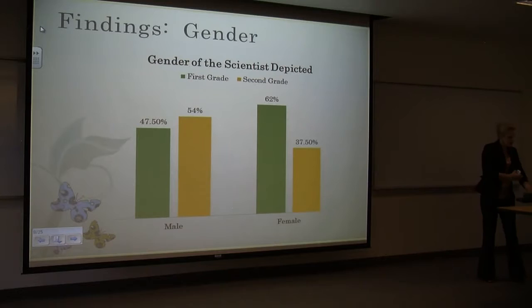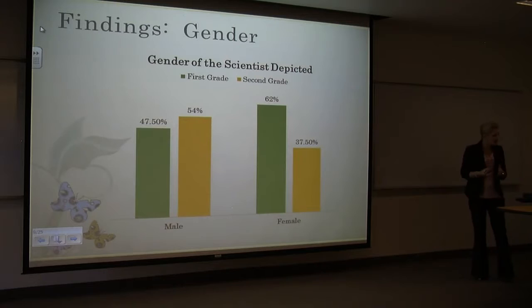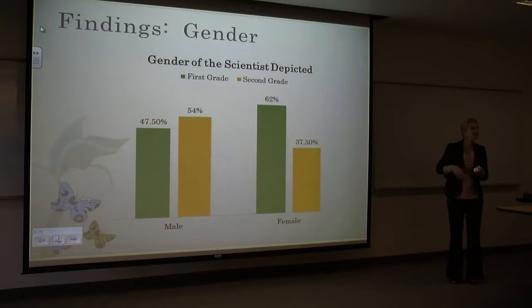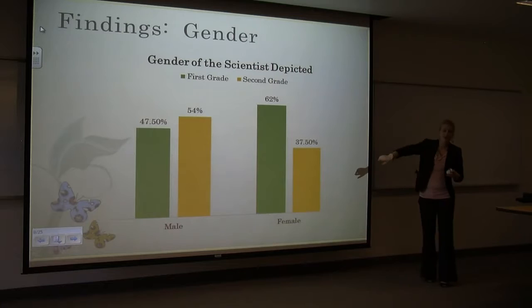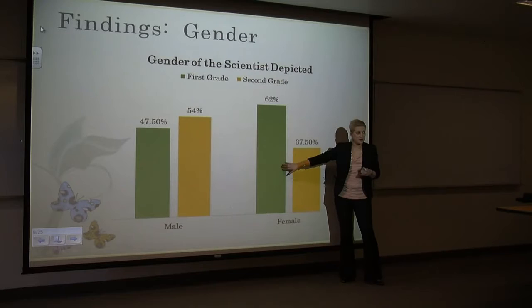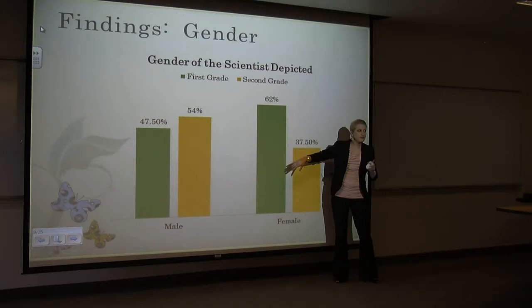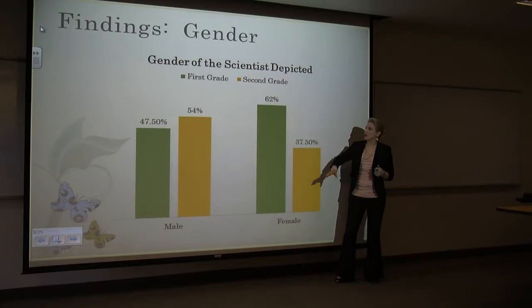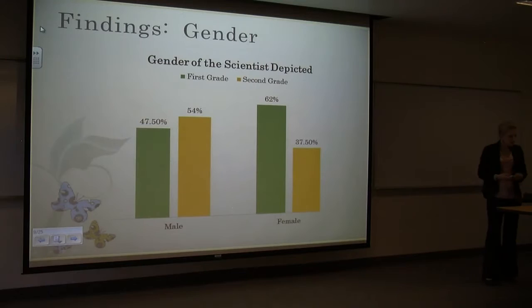With all this information, I chose to focus on five major categories. First: gender. Previous studies showed an extremely low percentage of females depicted as scientists. However, we see a surprisingly high amount of females depicted by first graders. Second grade is a little more evenly split. But remember, first graders haven't had all the education that second graders have supposedly had — so this is an unusual result.